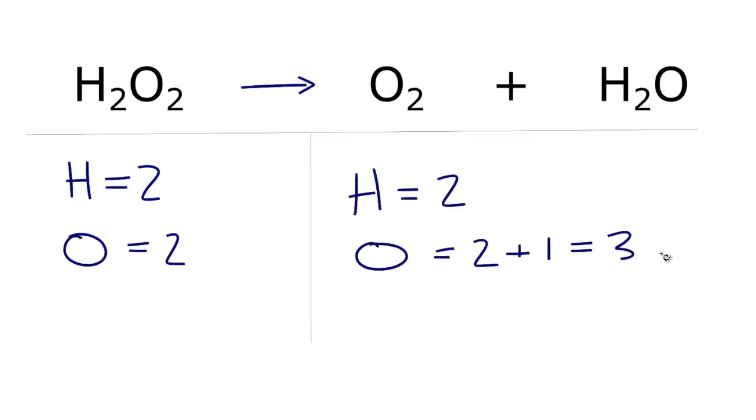What we can do whenever I have an odd number, I like to get that odd number of oxygens to an even number, and I can do that by multiplying it by two. So let's put a two in front of the H2O and see how that changes the oxygens.